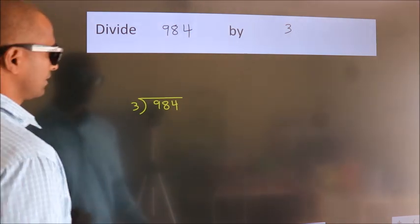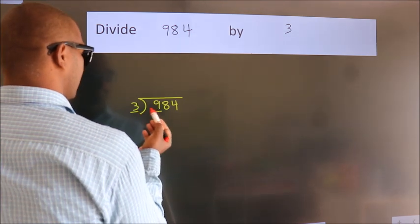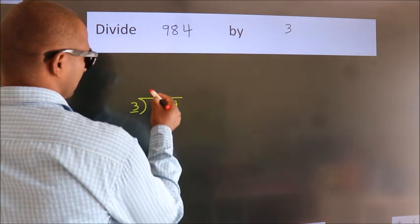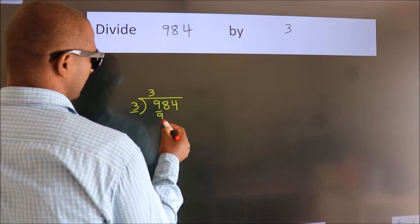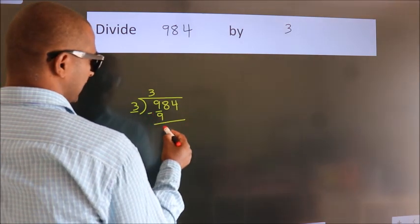Next, here we have 9, here 3. When do we get 9? In 3 table, 3 times 3 is 9. Now, we should subtract. We get 0.